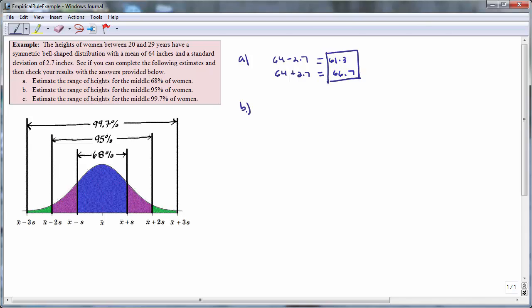In Part B, we estimate the range of heights for the middle 95% of women. To do this, we take the mean of 64 and subtract 2 standard deviations, minus 2 times 2.7 to obtain 58.6. And we take the mean of 64 and add 2 standard deviations, 64 plus 2 times 2.7 to obtain 69.4.